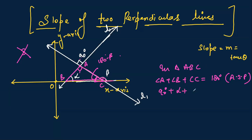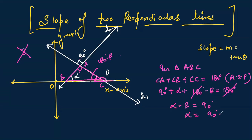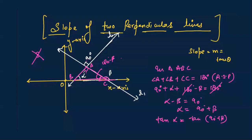Angle A is 90 degrees, angle B is alpha, and angle C is 180 minus beta. So: 90 + alpha + (180 - beta) = 180. The 180s cancel, leaving alpha minus beta equals 90 degrees, which gives alpha equals 90 plus beta. Now taking tan of both sides: tan(alpha) = tan(90 + beta).